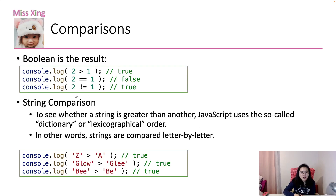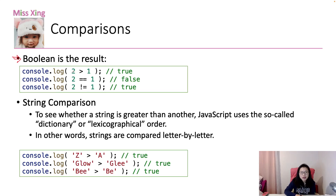We will cover several comparison cases. The first case is boolean — when we do a comparison the result is a boolean, meaning true or false. So here we compare numbers: two greater than one is true, two equals equals one is false.